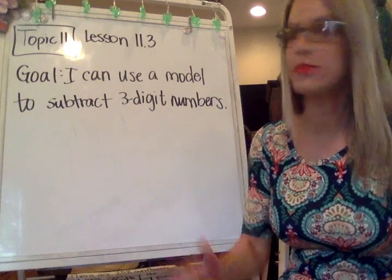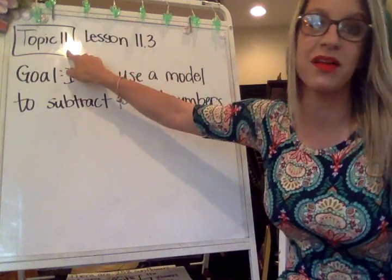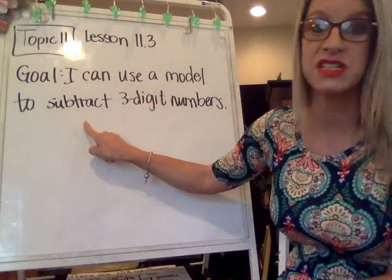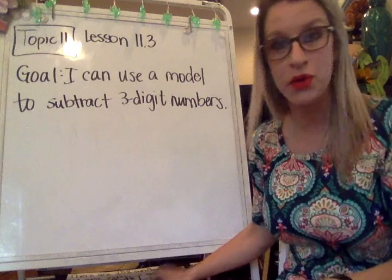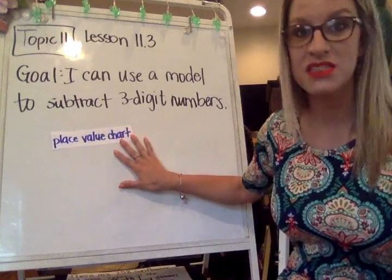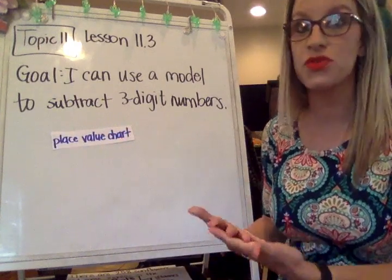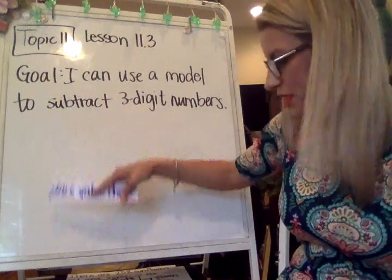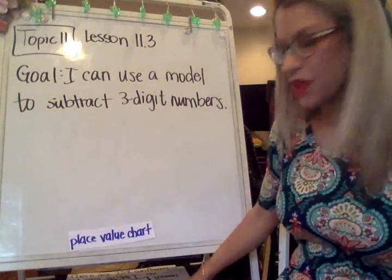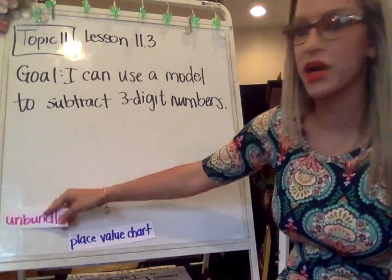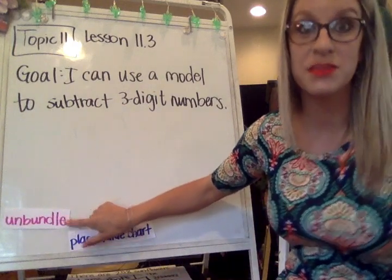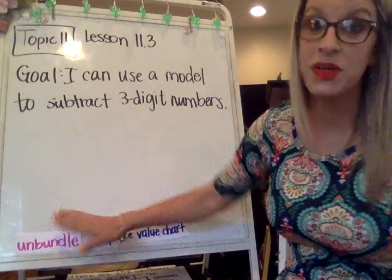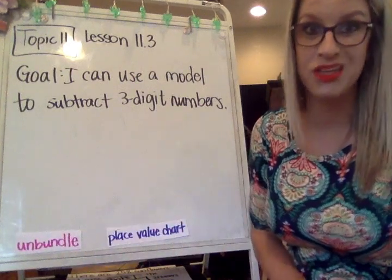We are on lesson 11.3 from topic 11. Today's goal is I can use a model to subtract three-digit numbers. The model that we're going to be using is the place value chart. Because they're three-digit numbers, there's going to be three different columns: the hundreds, tens, and the ones place for these equations. Another term that you're going to hear a lot is the word unbundle. This is something that we've already done before, but we're going to be using it with three-digit numbers instead of just two-digit numbers like in the past.